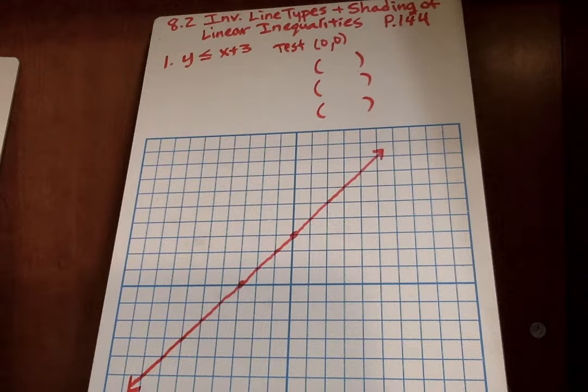Hello students. Today we will be going over 8.2, investigating line types and shading of linear inequalities. Our objective: I can graph linear inequalities with appropriate boundary line and shading.